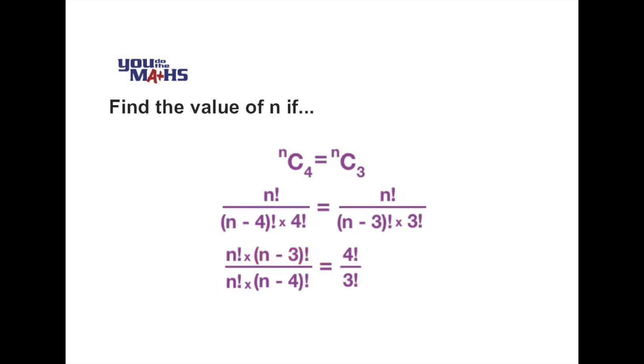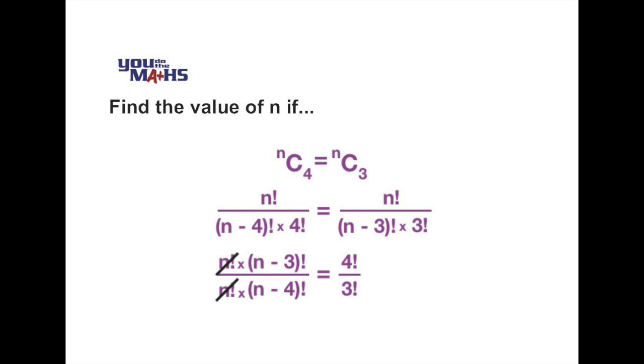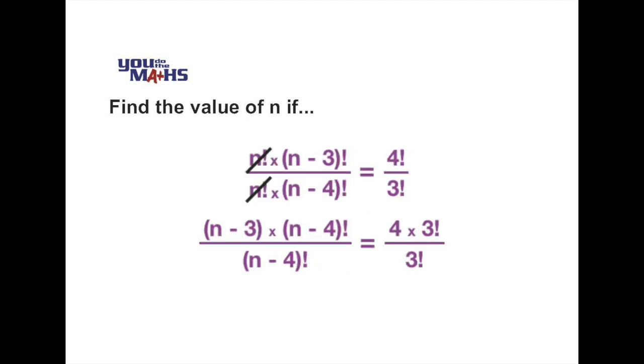Our first step to simplify here would be to divide the left hand side by n factorial. Doing so cancels the n factorial in the top and bottom line. The next step would be to break down some of the factorial notation so we could do some further division. For example, we know that 4 factorial on the right hand side can be expressed as 4 times 3 factorial, and we also know that n minus 3 is greater than n minus 4, so we can break n minus 3 down into n minus 3 multiply the number one less than that which can be expressed as a factorial. In this case, n minus 3 times n minus 4 factorial.